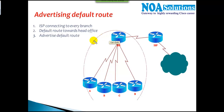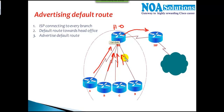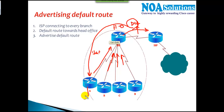Advertising the default route is very common in production networks. The company takes a single ISP connection from the head office and shares it across all branch offices — any number of branches. By combining the default route with the IGP, every branch office learns that for any unknown destination they should go to the head office, which has a default route to the ISP, and the ISP knows where the public servers on the internet are.